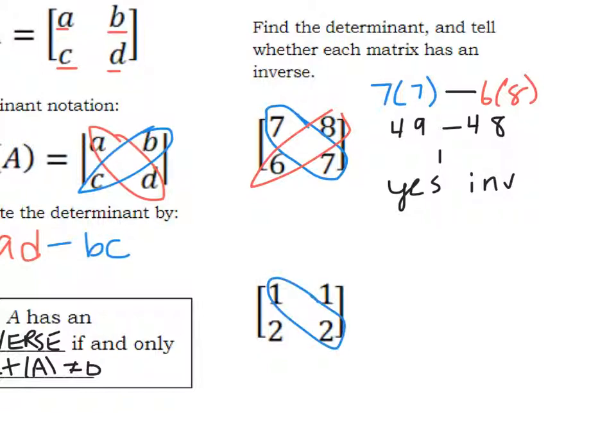Now we're going to do 1 times 2 minus 2 times 1, which gives me 0. So there's not an inverse for that matrix.